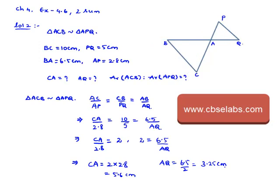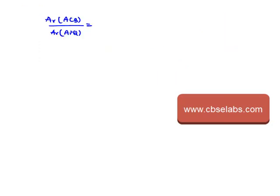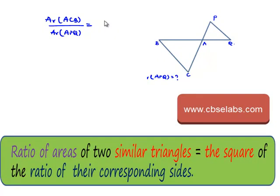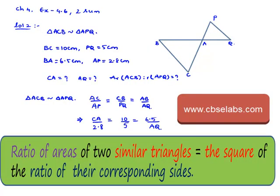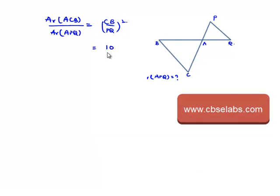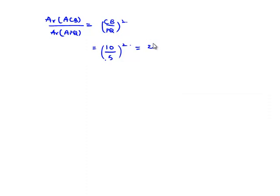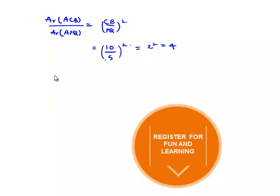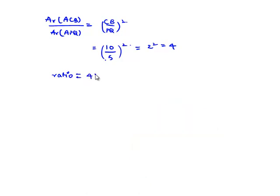When two triangles are similar, then their ratio of areas will be equal to square of ratio of their sides. That is, we can consider any corresponding side, that is CB and PQ. Then we can write the ratio of their areas as square of the corresponding sides, that is CB by PQ whole square, which is equal to CB value is given as 10 cm and PQ value is given as 5 cm. Let us square it, that is equal to 10 by 5 is nothing but 2 square that is equal to 4. Therefore, the required ratio of area of triangle ACB to the area of triangle APQ is nothing but 4 is to 1.